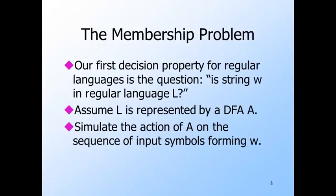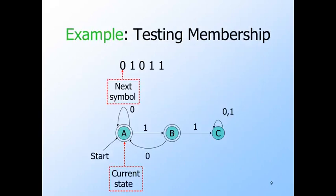The membership question for a regular language is answered by an algorithm that takes a DFA and a string and tells whether or not the string is accepted by the DFA. The algorithm is the obvious one: simulate the DFA on the input. Here's an example — something we've seen several times before, presented in a different style each time, but the idea is always the same.